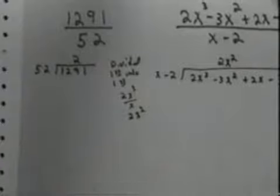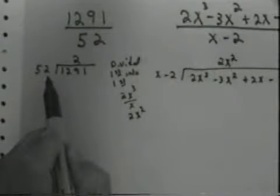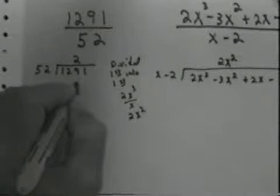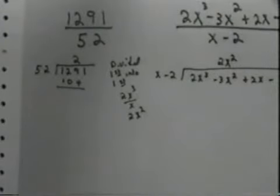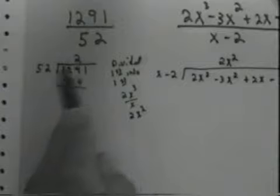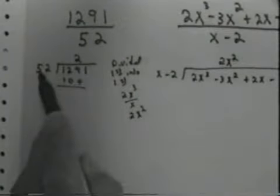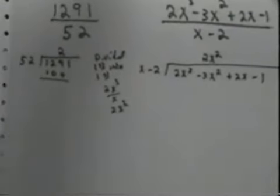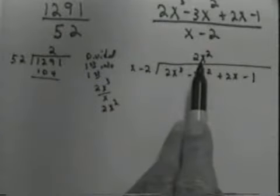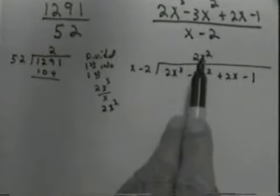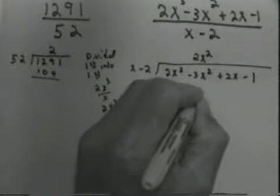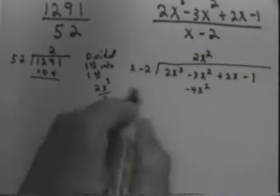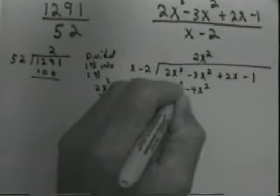Now over here what happens? Well once you divide, then you multiply. 2 times 2 is 4. 2 times 5 is 10. So I multiplied the 2 times the 2, the 2 times the 5. So I multiplied the trial quotient by the divisor. So we multiply the trial quotient by the divisor. I'm going to do the same thing with this one. I'm going to multiply the 2x squared times the negative 2. I'm also going to multiply the 2x squared times the x. 2x squared times the negative 2 is going to be a negative 4x squared. 2x squared times x is 2x cubed.